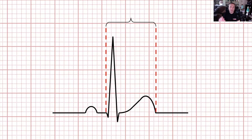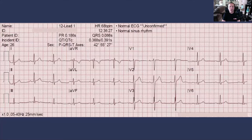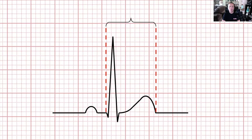If the QRS duration is 120 milliseconds or three small blocks or larger, we're going to have to explain that — that is a prolonged QRS complex and we'll need to look for things like bundle branch block, paced rhythm, or ventricular rhythm to help explain it. Then the QT interval is measured from the beginning of the QRS complex to the end of the T wave. This measurement has to be normalized for heart rate — at a heart rate of about 60, you'll have a QT interval of about 400 milliseconds.